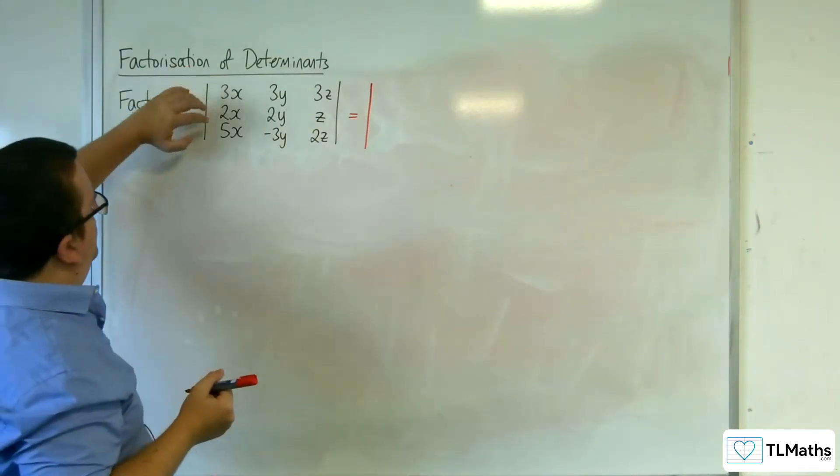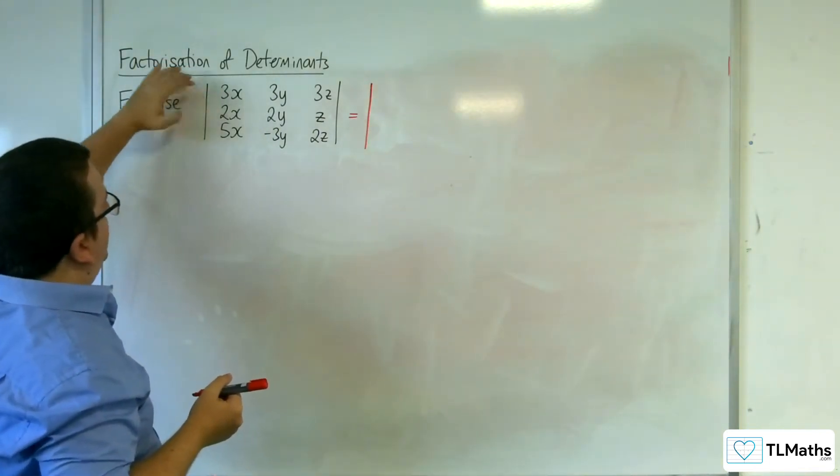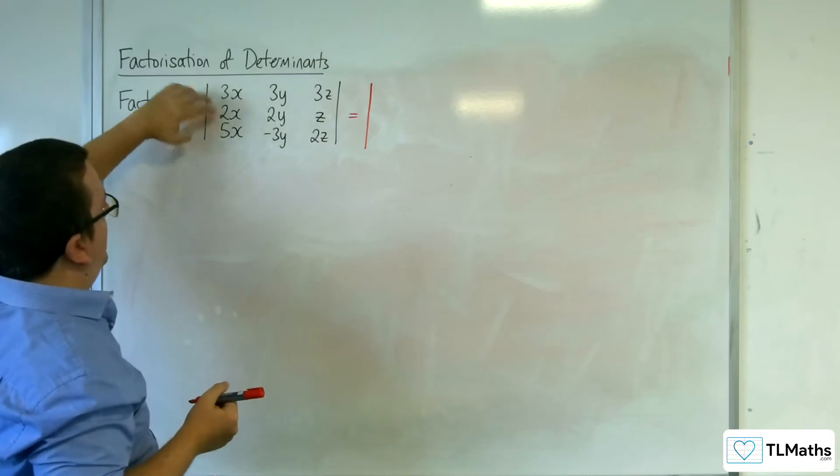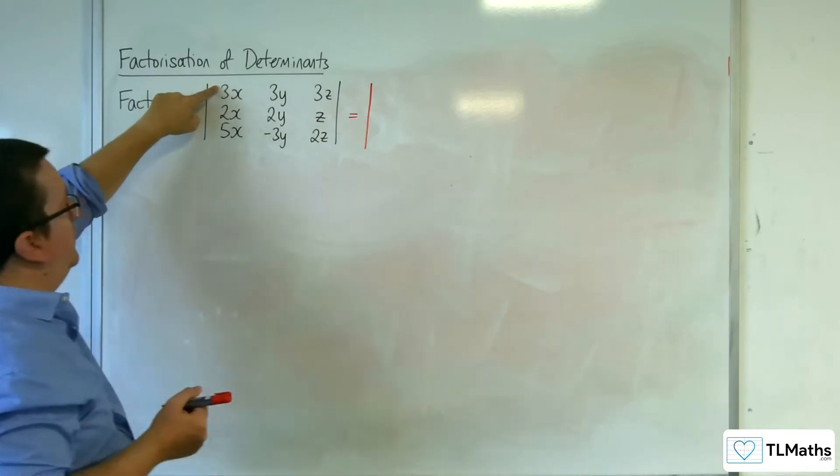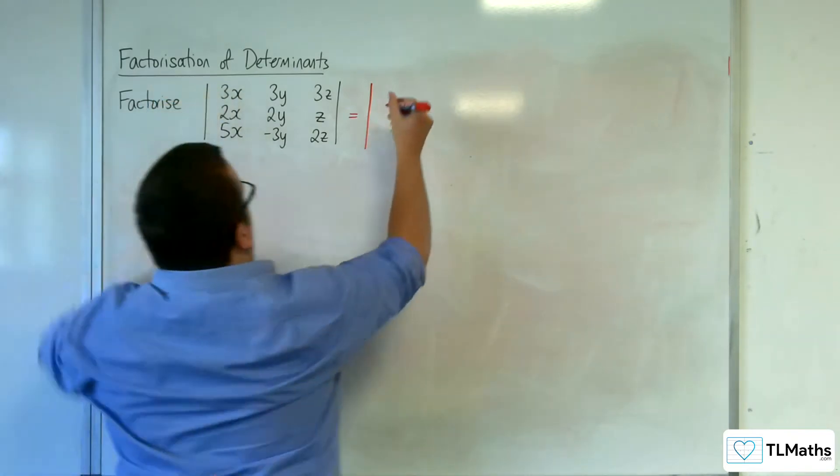So I'm going to do, effectively, adding those two rows together and then subtract it from row 1. So I've got 7x take away from 3x. So 3x take away 7x is minus 4x.